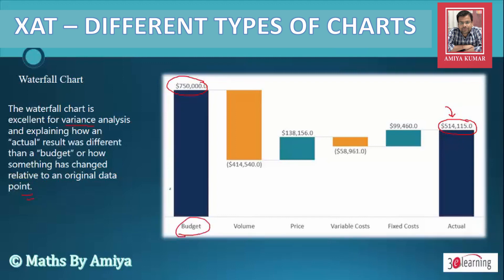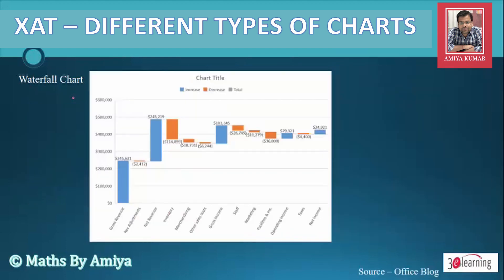For example, we have a budget of 7.5 lakhs, then volume adjusted, price increase, variable cost adjusted, fixed cost increase, and finally we get our actual. To understand the Waterfall Chart in a better way, let's discuss another example.